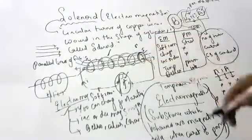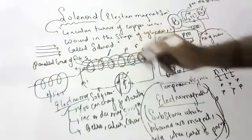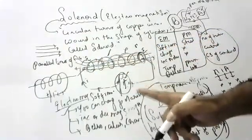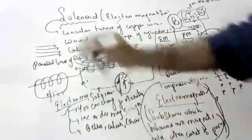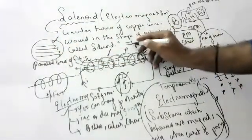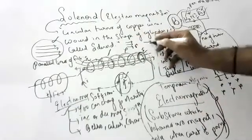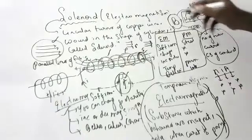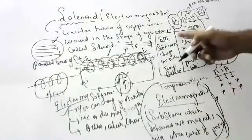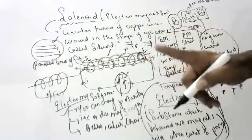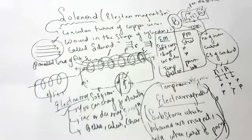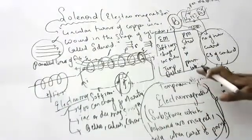In the exam, write about the solenoid, draw the figure, write about the electromagnet, and explain that inside the solenoid the magnetic field is uniform. Uniform magnetic field is denoted by parallel lines of force. The magnetic field depends on number of turns, current, and area of the cross-section. An advantage of the electromagnet is that you can change the polarity and increase or decrease the magnetic strength, and it is temporary.